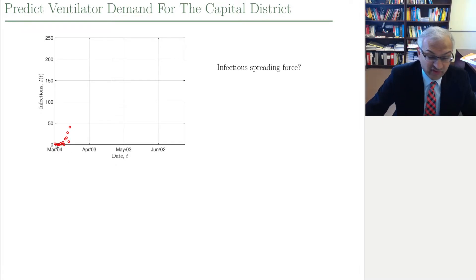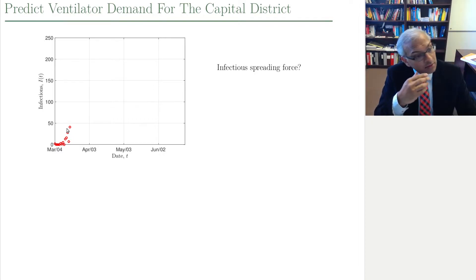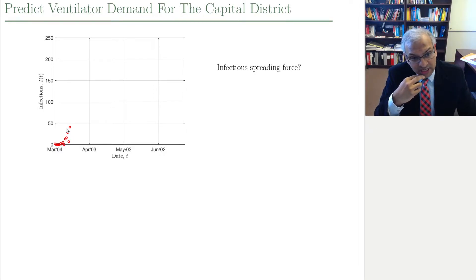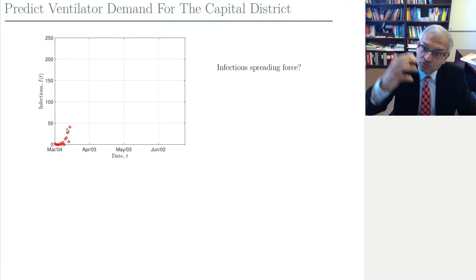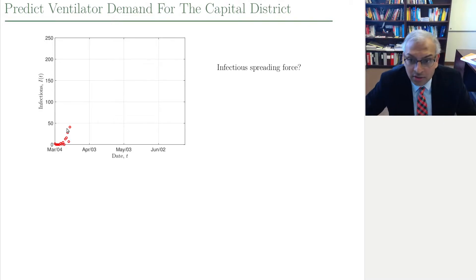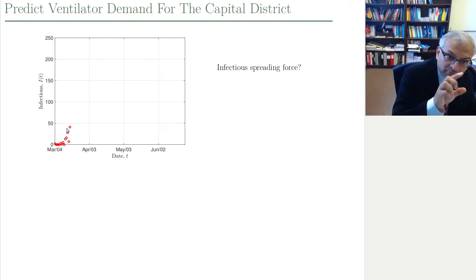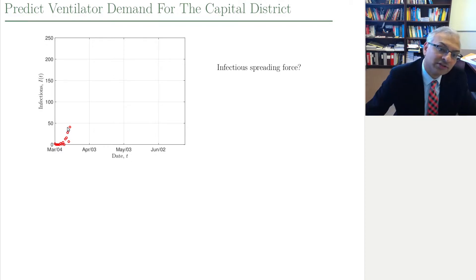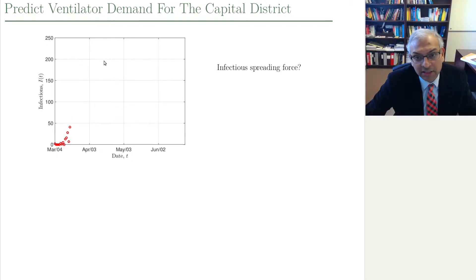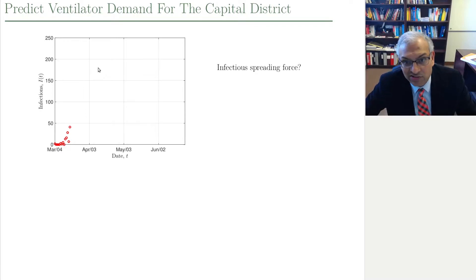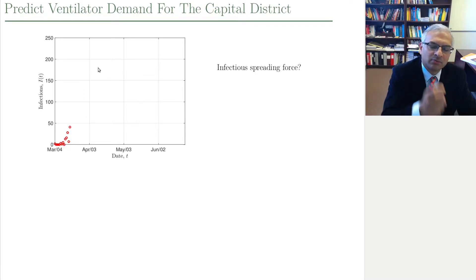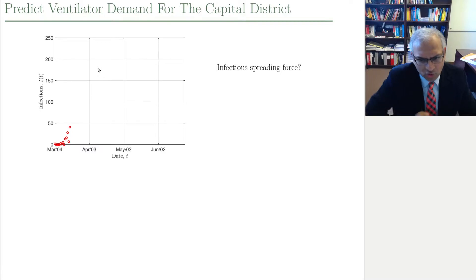And you might say, well, that's very little data. Yes. The natural approach is that COVID has been roaming around the world for some time now. Maybe we can use what's been going on elsewhere in order to help us predict what will happen. How will these red dots grow in the future? What will the peak be? How many ventilators do we need? We're essentially trying to predict what's the infectious force of COVID.